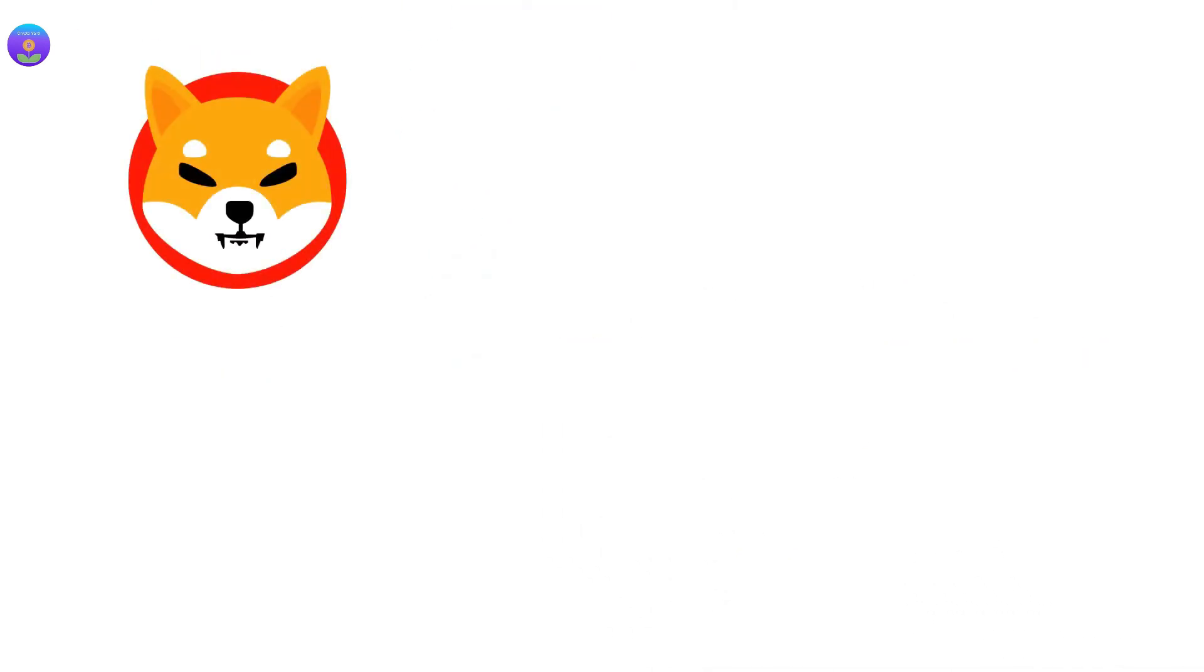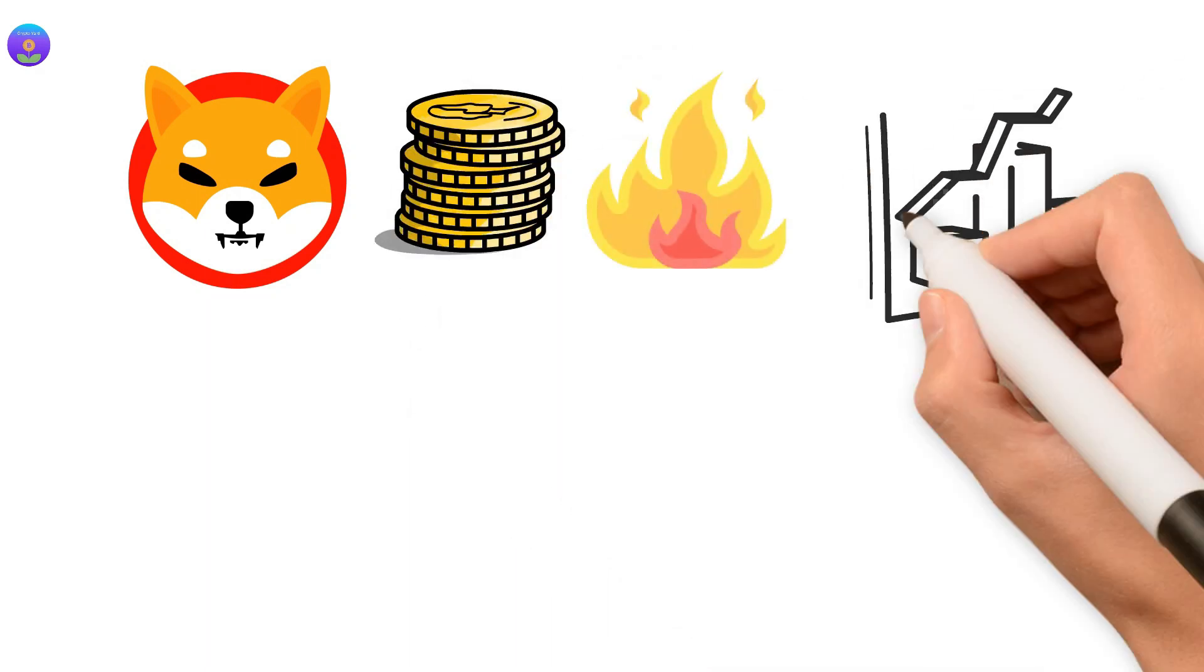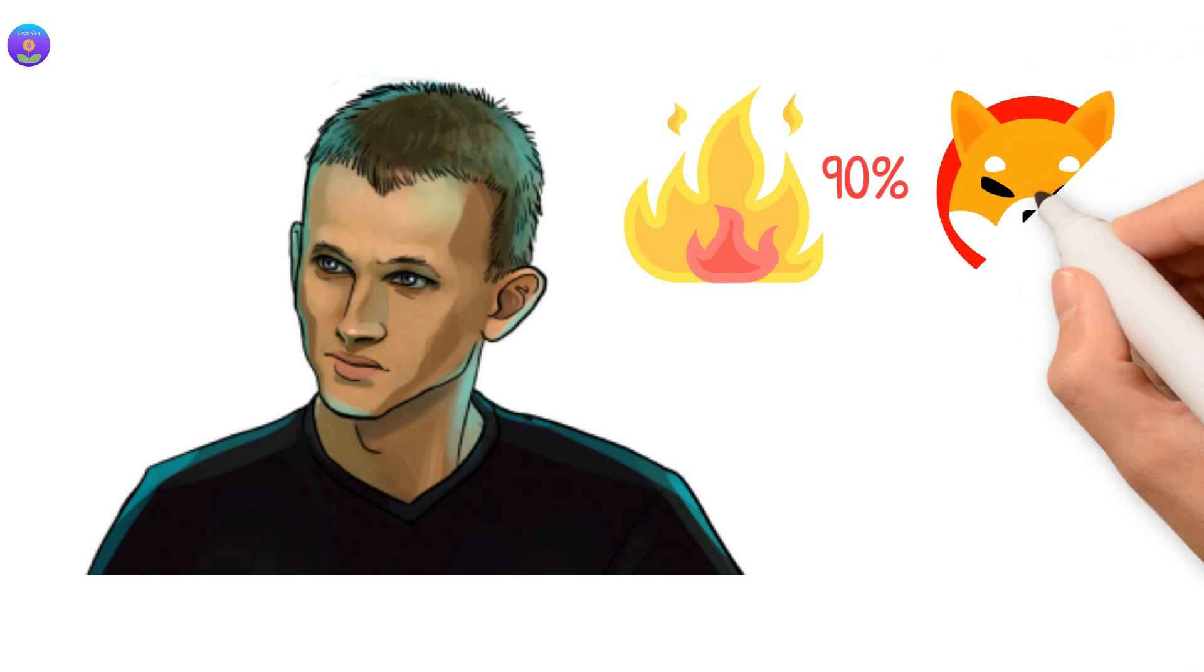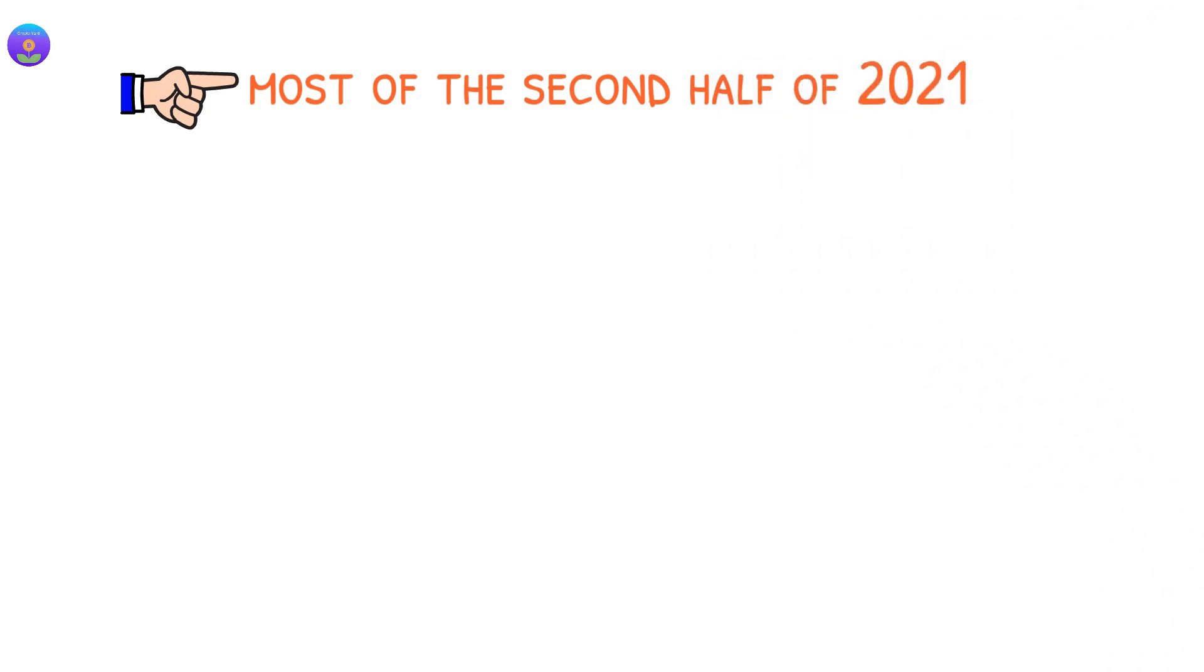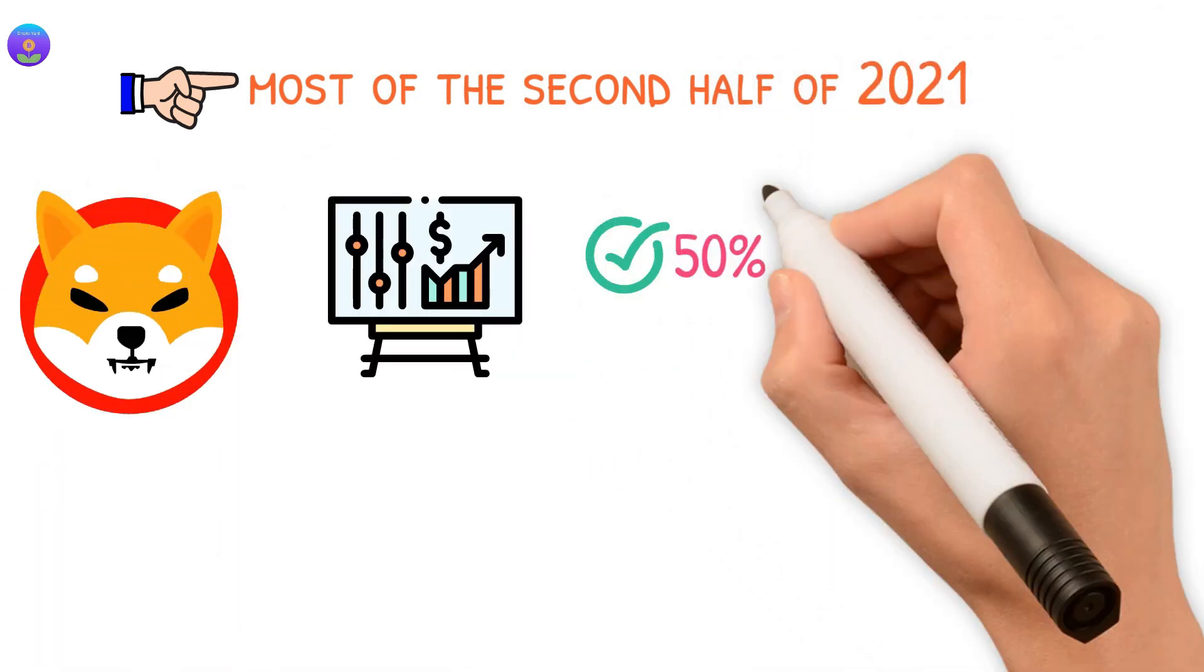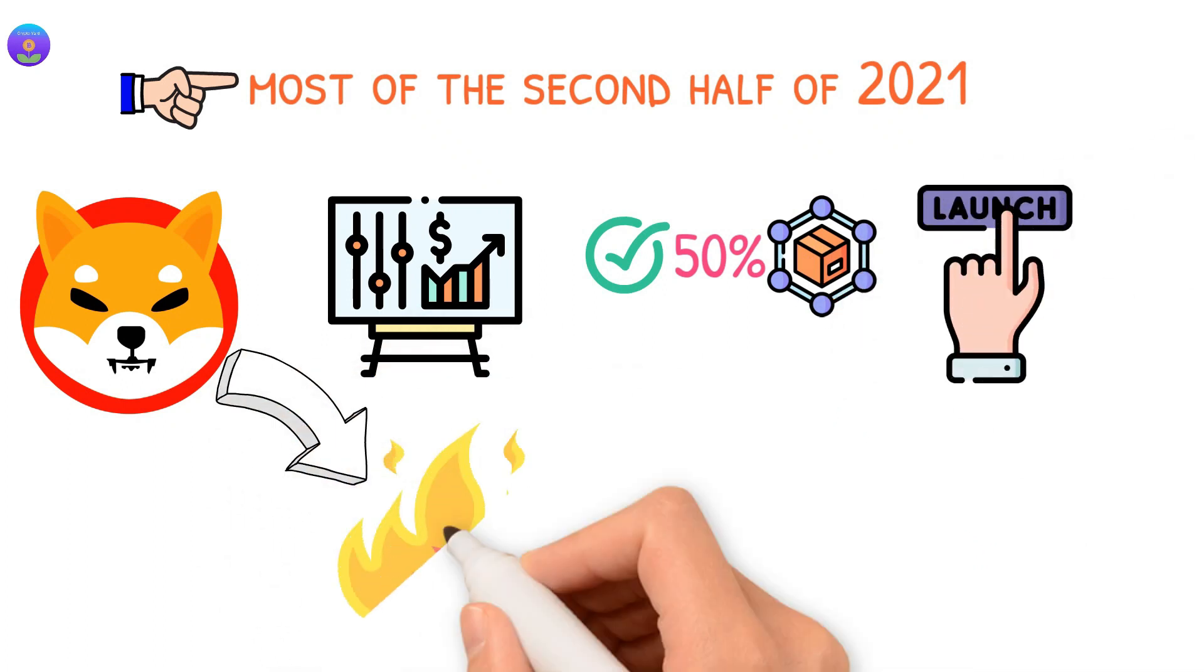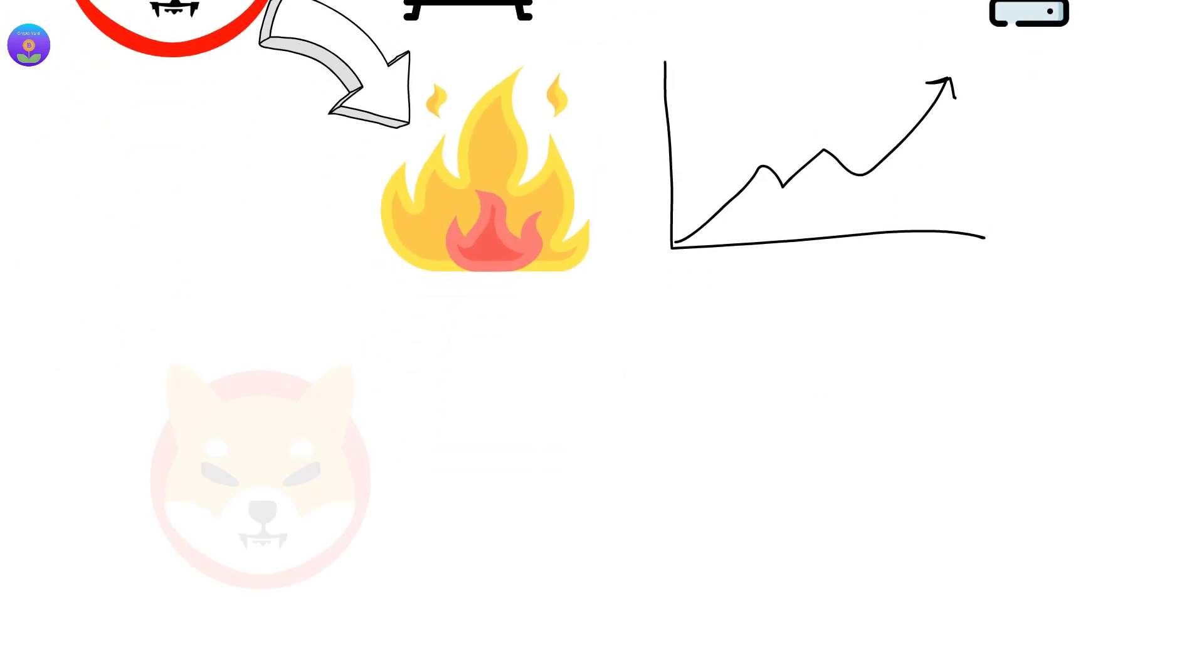Shiba Inu is designed in such a way that tokens are burned over time. The token burn feature got the biggest boost in 2021 after Vitalik Buterin burned over 90 percent of the Shiba Inu gifted to him at launch. When you factor in that Shiba Inu is continually burning tokens and that adoption is on a growth path, it is not hard to see why SHIB is primed for another rally in the next bull cycle.